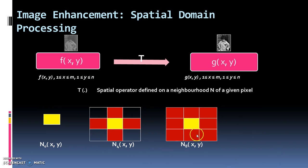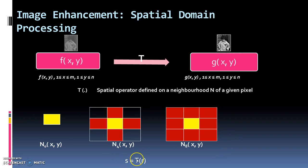So we have point processing and mask processing. Every pixel of the image f(x,y) is denoted by r, and every pixel of g(x,y) is denoted by s. Basically, what you have to do is find the transform T which maps every r to s.